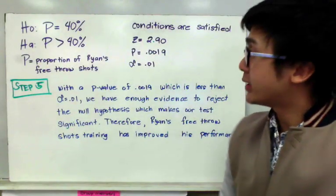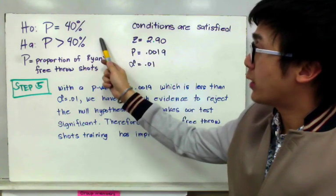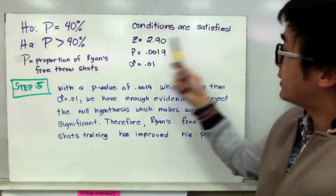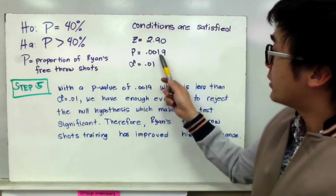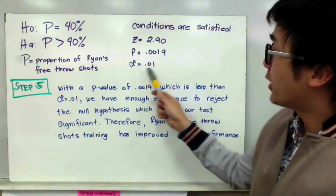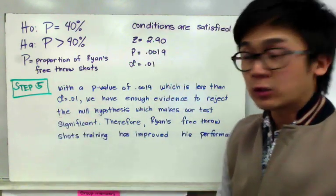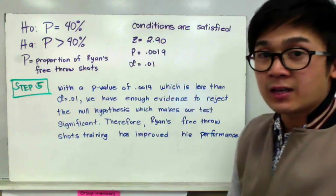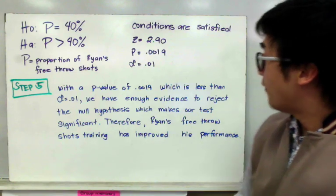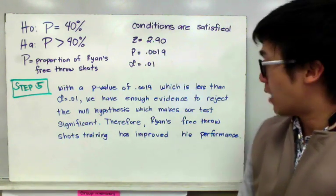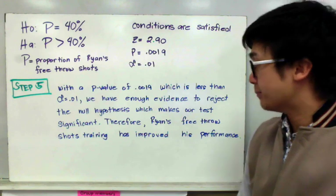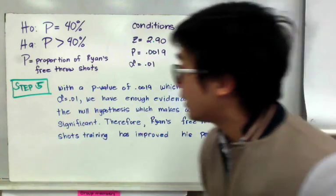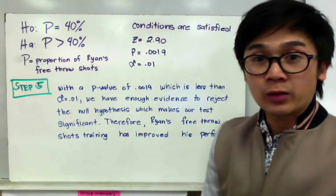To summarize: our hypotheses were p equal to 40% and p greater than 40%. All conditions were satisfied, with a z-value of 2.90 and a p-value of 0.0019. Since the p-value of 0.0019 is less than alpha of 0.01, we have enough evidence to reject the null hypothesis — the test is significant. Therefore, Ryan's free throw training has improved his performance, based on our hypothesis testing.